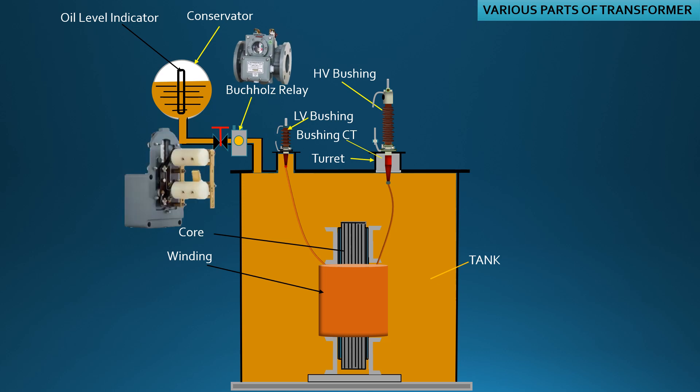This is the Buchholz relay. When incipient fault occurs at windings or core, electric flashover occurs inside oil, creating oil vaporization. The vapor comes out and reaches the Buchholz chamber and becomes trapped here.